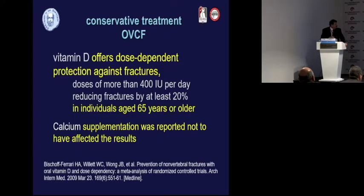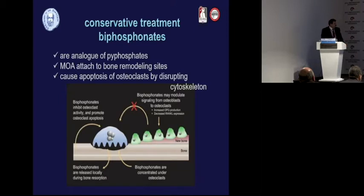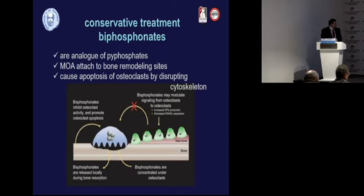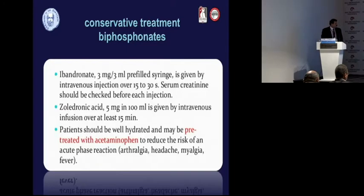Bisphosphonates offer dose-dependent protection against fractures. They work in two ways: first, they are released locally during bone resorption and promote osteoclast apoptosis; and second, they stop signaling from osteoblasts to osteoclasts. Ibandronate 3 mg per 3 ml in a prefilled syringe is given intravenously.